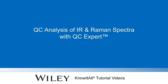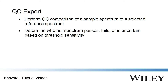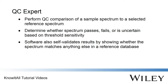Welcome to a demonstration of how to use Know-It-All QC Expert to analyze IR or Raman spectra. Know-It-All QC Expert is an application to perform a quality control comparison of a sample spectrum to a reference spectrum set by an administrator. The software determines if the spectrum passes, fails, or is uncertain based on threshold sensitivity set by an administrator, and also ensures the sample does not match anything else in a reference database set by the administrator.